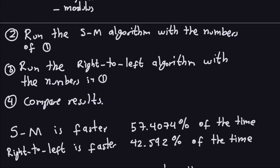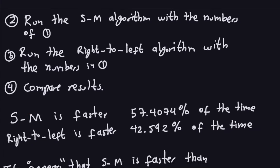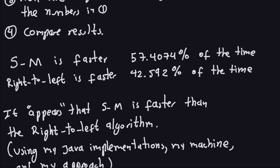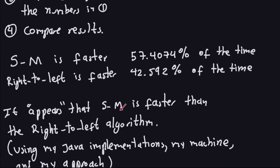The results show that the square-multiply algorithm is faster 57.4074% of the time using randomly generated numbers, and the right-to-left algorithm is faster 42.592% of the time. This gives the same conclusion as last time when I fixed the base, exponent, and modulus — it appears that the square-multiply algorithm is faster than the right-to-left algorithm.